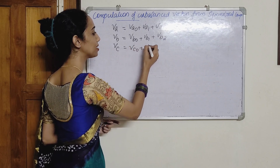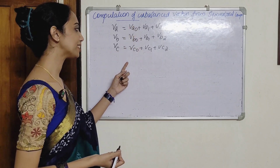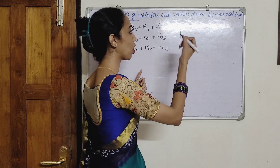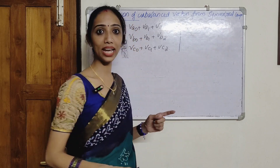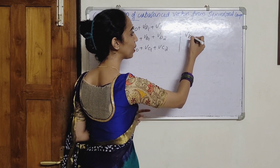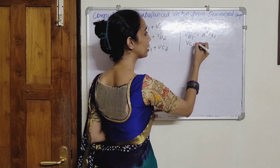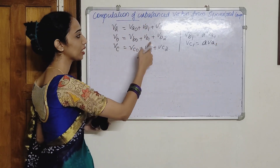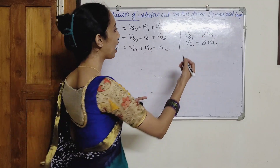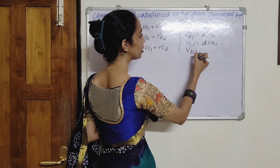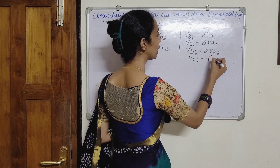If you use the A operator into VA1, you substitute it as VB1. If you use A into VA2, you get A squared into VA2 for the VB2 term.